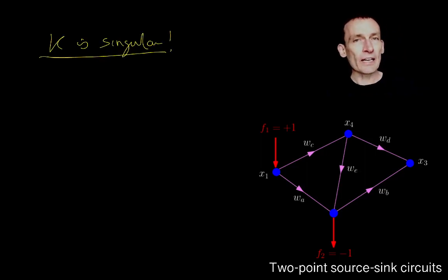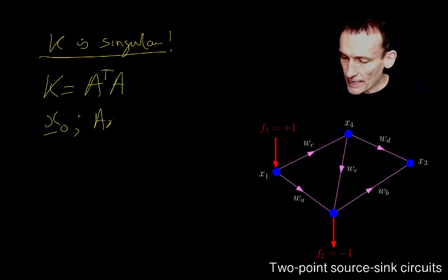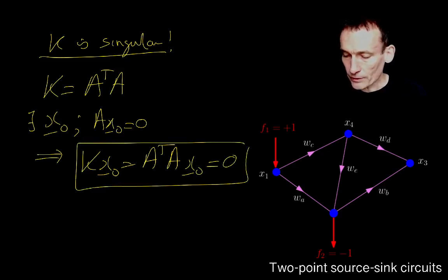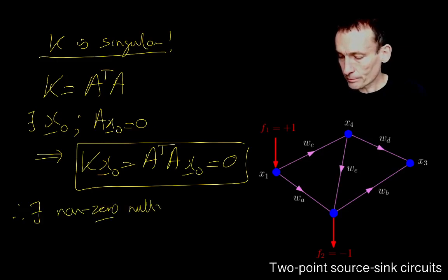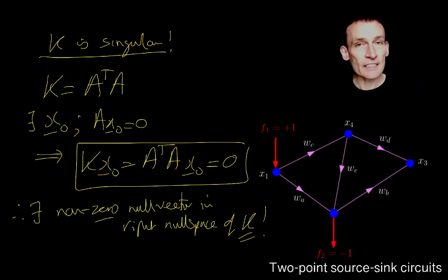And we know that for the following reason. Remember that K is A transpose A. And we know that X0 is such that AX0 is equal to 0. So there exists this X0 vector. So this means that KX0, which is A transpose A X0, is obviously 0.